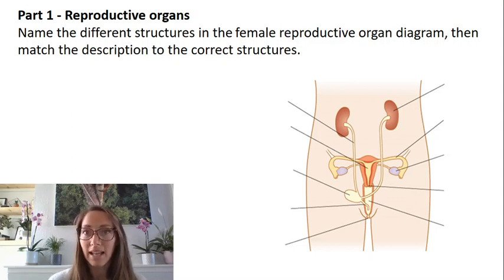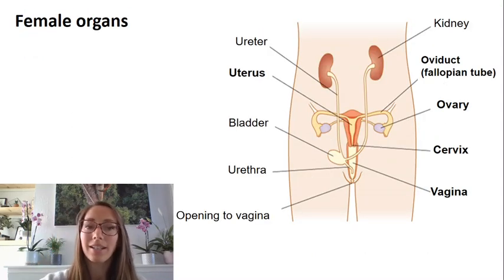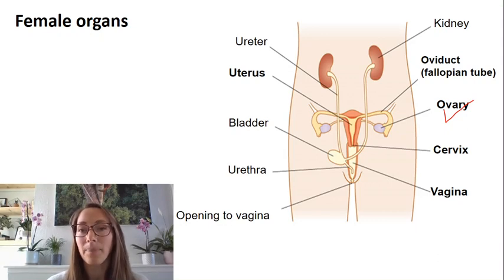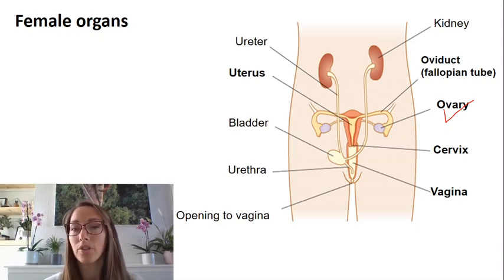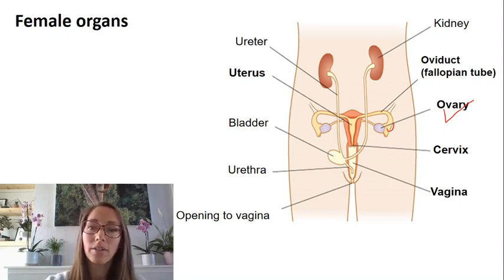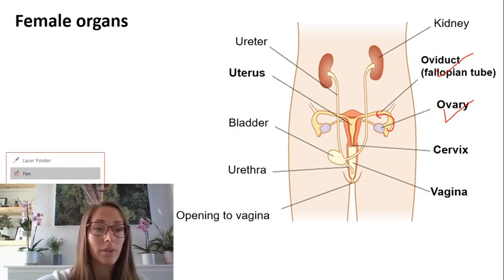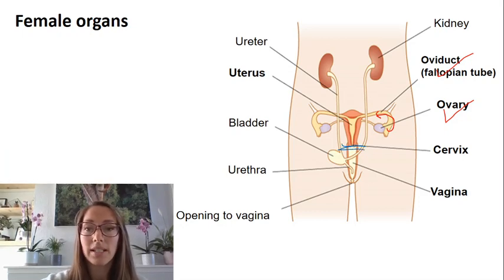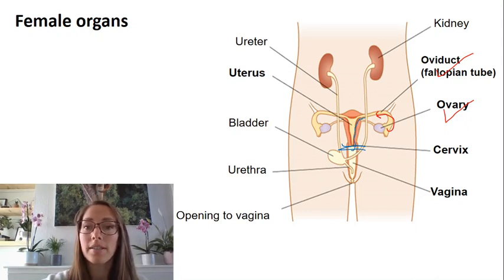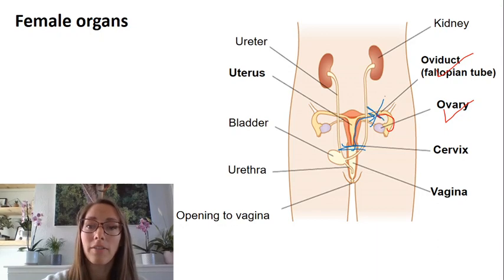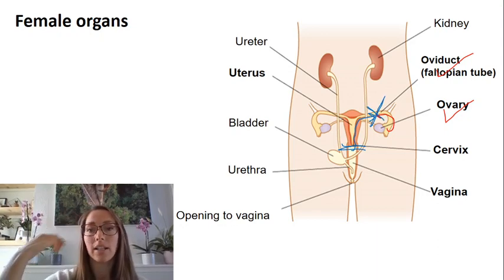Looking at the reproductive organs, the first structure to notice is the ovaries — this is where gametogenesis occurs, where your secondary oocytes are produced and released during ovulation. Those secondary oocytes travel down the fallopian tubes, also known as the oviduct. If there has been recent sexual intercourse and sperm were deposited at the base of the cervix, the sperm might swim up through the uterus into the fallopian tubes towards the secondary oocyte, and it's in that location where fertilization would occur.